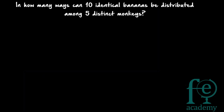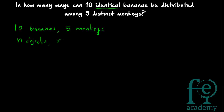Question number 2: In how many ways can 10 identical bananas be distributed among 5 distinct monkeys? This is again a question of distributing identical objects among people. There are 10 identical bananas to be divided among 5 monkeys. Using the formula N plus R minus 1, C R minus 1, here N is equal to 10 and R is equal to 5.